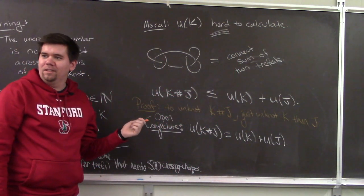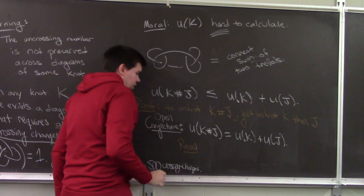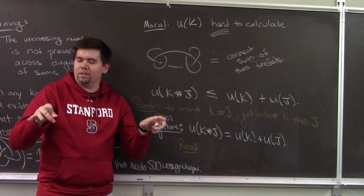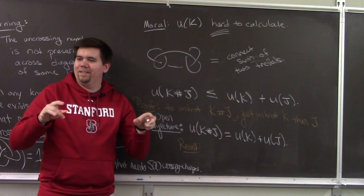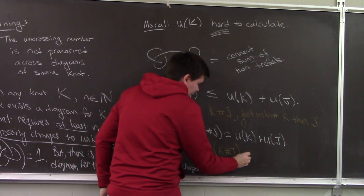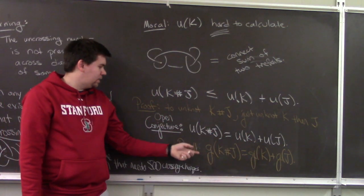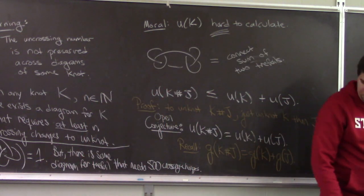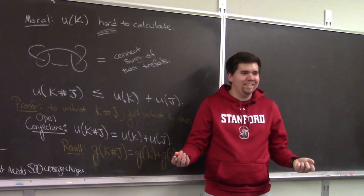This echoes something similar we looked at before — the genus. We showed the genus of K # J equals the genus of K plus the genus of J; genus is additive under connect sum. And we want to say something similar — that the unknotting number is additive — but we haven't been able to prove this. So open problem: if you do prove it, give it to me, I'll give you an A in the class and then publish it.